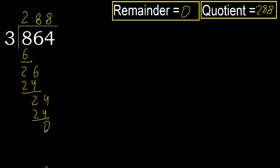Ok, remainder 0, therefore 864 divided by 3 is 288.